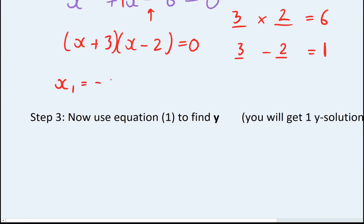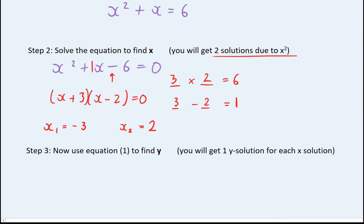So my first solution, I'm going to call x1, which is minus three. My second solution, I'm going to call x2, is going to be two. And now we need to find both their corresponding y solutions. So if you've got two x solutions, you're going to find two y solutions, and they're going to come in pairs.